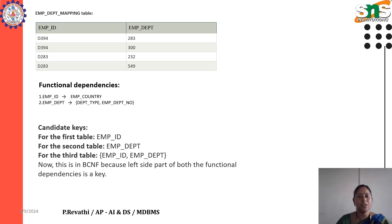Now, the candidate keys: for the first table, the candidate key is employee ID; for the second table, the candidate key is employee department; and for the third table, the candidate keys are employee ID and employee department. This is now in Boyce-Codd Normal Form because the left-hand side of both functional dependencies is a key.